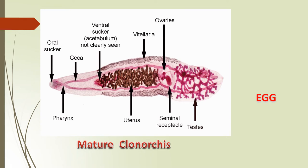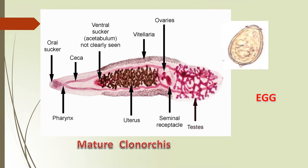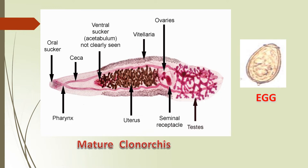In the diagram of the mature Clonorchis, you can see the oral sucker and ventral sucker. The intestinal caeca and pharynx are present, with viteline glands on the lateral sides. Ovaries are present with a large uterus, and testes are in the posterior half. An embryonated egg can also be seen.